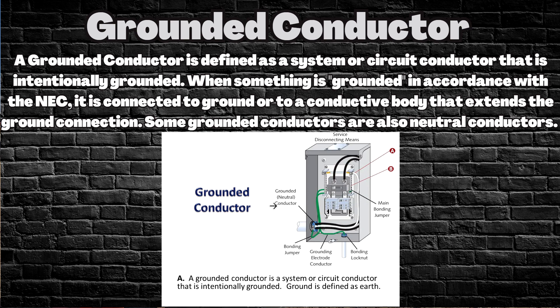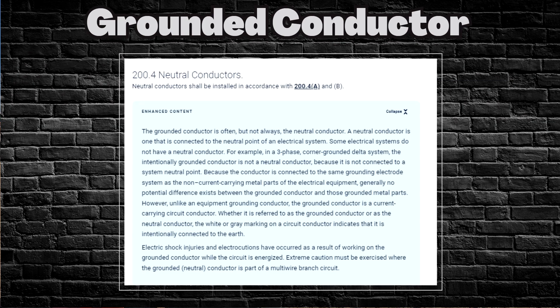Neutral conductors shall be installed in accordance with NEC 2020 section 200.4(a) and (b). The grounded conductor is often, but not always, the neutral conductor. A neutral conductor is one that is connected to the neutral point of an electrical system. Some electrical systems do not have a neutral conductor — for example, in a three-phase corner-grounded delta system, the intentionally grounded conductor is not a neutral conductor because it is not connected to a system neutral point. Generally, no potential difference exists between the grounded conductor and grounded metal parts, but unlike an equipment grounding conductor, the grounded conductor is a current-carrying circuit conductor.